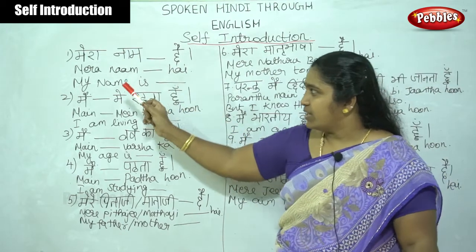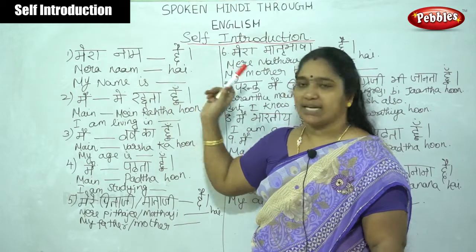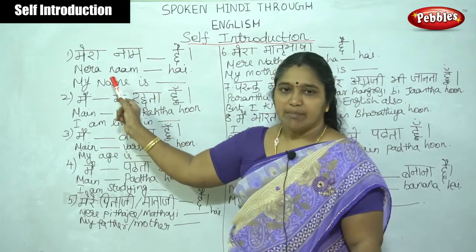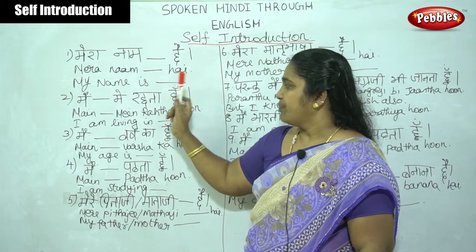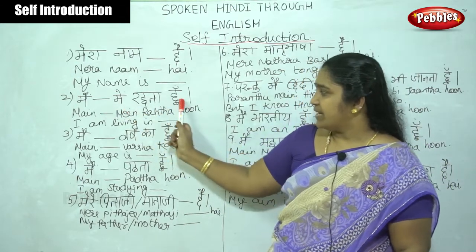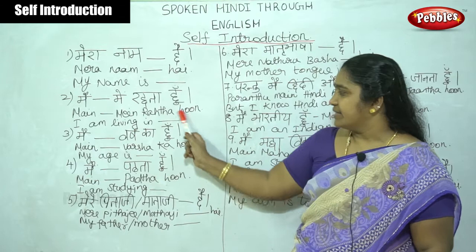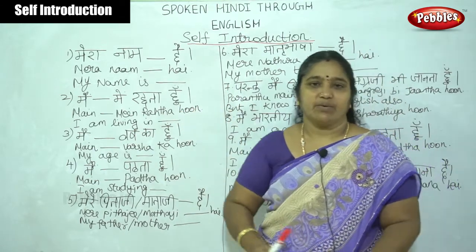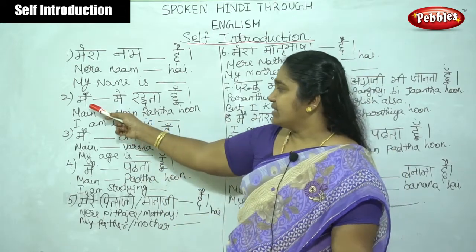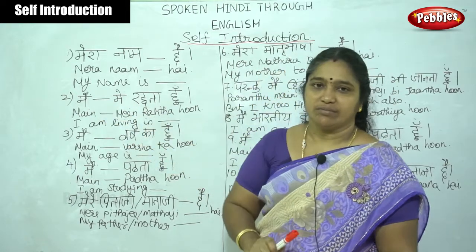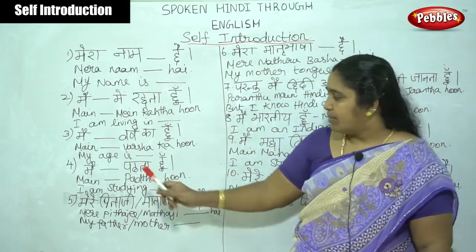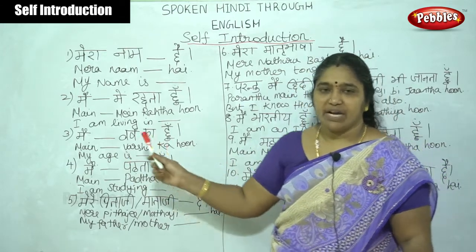The first phrase is: 'Mera naam dash hai' — 'My name is dash' in English. Next is: 'Mai dash me rehta hoon' — I am living in dash, where we write the place we are living, such as Madurai, Chennai, Mumbai, or Delhi. For example: 'Mai Mumbai me rehta hoon.'